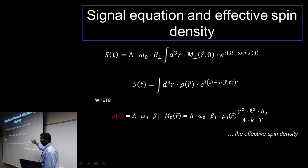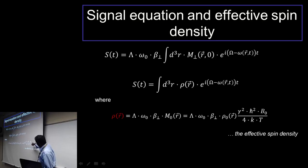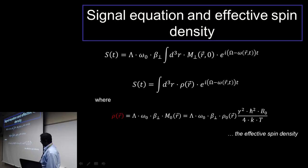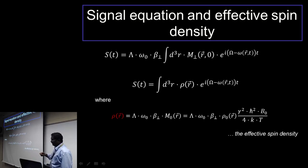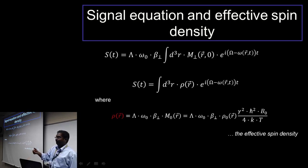If you look at the number of spins available at a particular field strength, it is dependent on the magnetic field and inversely proportional to temperature. Once you substitute that into the equation, representing m-perpendicular in terms of an effective spin density ρ(r), you can absorb all those terms into ρ(r). This effective spin density is quite illustrative in understanding the dependencies of your signal on different experimental parameters — dependent on B0, inversely proportional to temperature, and certainly dependent on omega_0 as well.